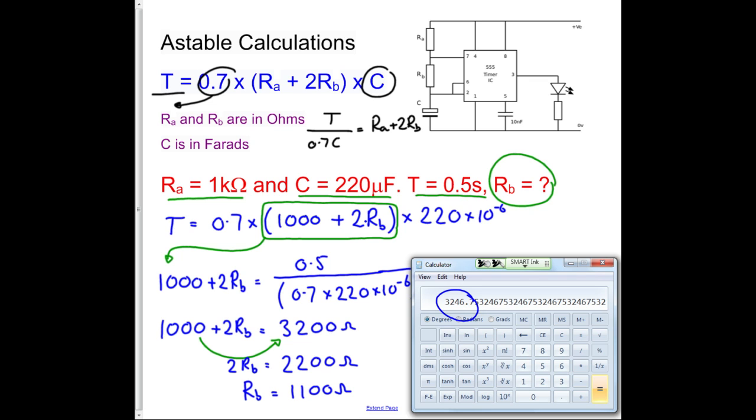And that's the way that you do this calculation, you start off by calculating this part here, the T divided by 0.7C, you get a number, you take the RA away from it, and then you divide by 2 as the last step. So that's quite complex.